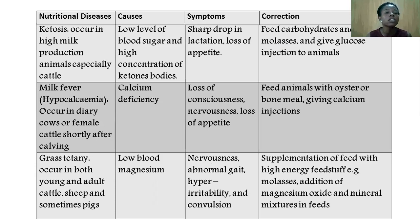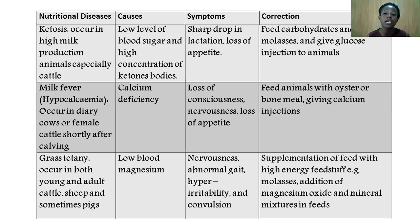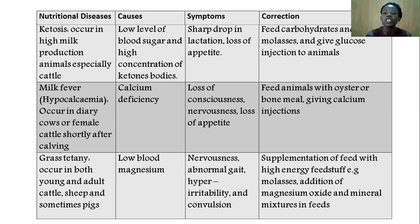Another nutritional disease is ketosis. It occurs in high milk-producing animals, especially dairy cattle. It is caused by a low level of blood sugar and high concentration of ketones in the body — ketones being a product of carbohydrate digestion. Symptoms are a sharp drop in lactation and loss of appetite. To correct ketosis, feed the animal with carbohydrates and molasses, and give glucose injections.